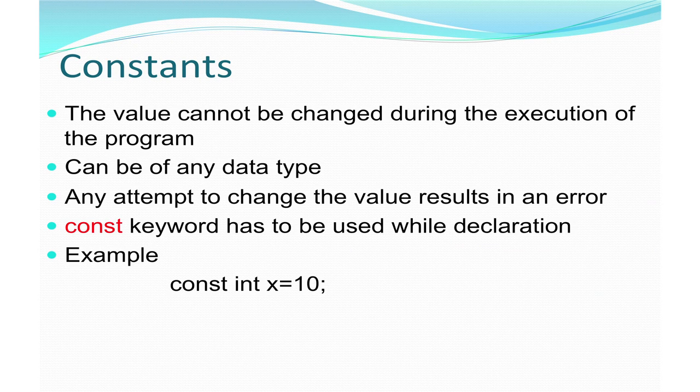We move on to the next topic, which is constants. As the name says, the value which cannot be changed during the entire execution of the program is a constant. Any data type can be used to form a constant — I can form an integer constant, a float constant, or a character constant. But once I declare a constant and give it a value, I cannot change that value through the course of the program. If I try to change it, the compiler will flash an error. A constant variable has to be preceded with the keyword const. For example, I am giving the value 10 to the constant integer.